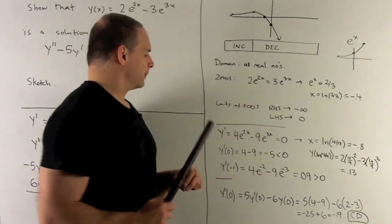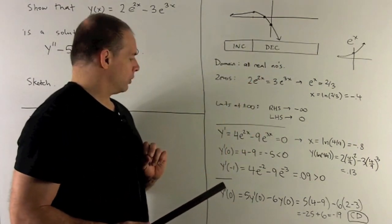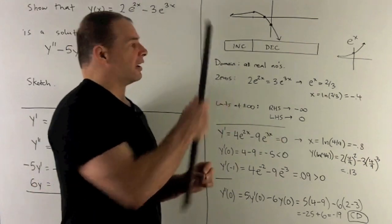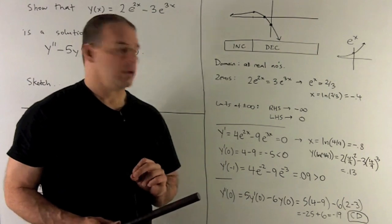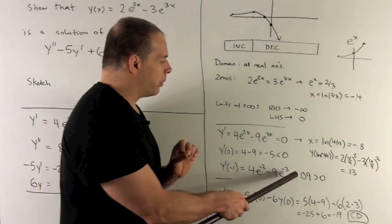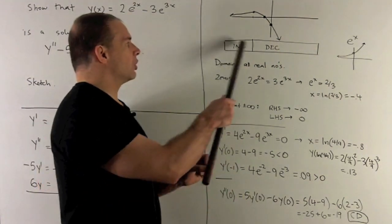Then on this side, we could try, say, well, minus 1 is going to be on this side of minus 0.8. So if I put minus 1 in there, okay, we grind that out, and I get 0.09. So we're going to be increasing on this side.